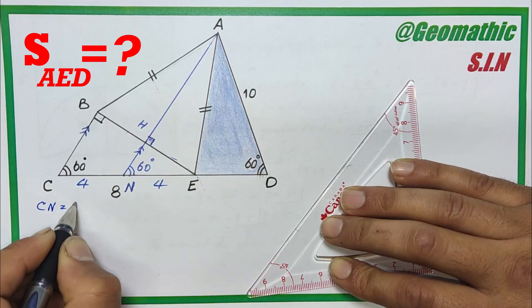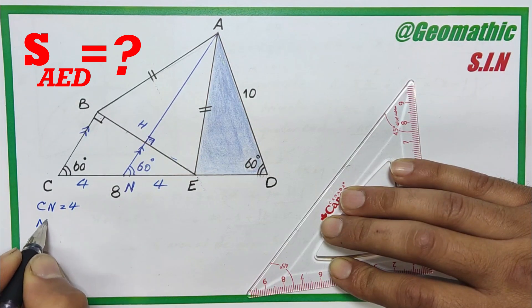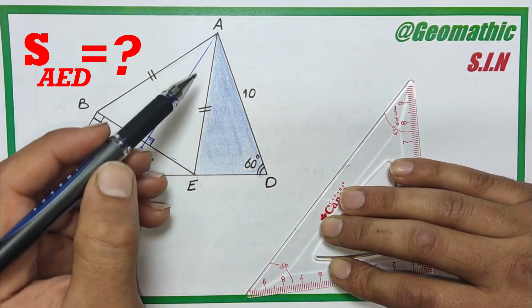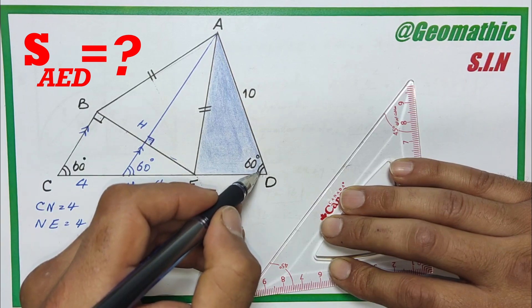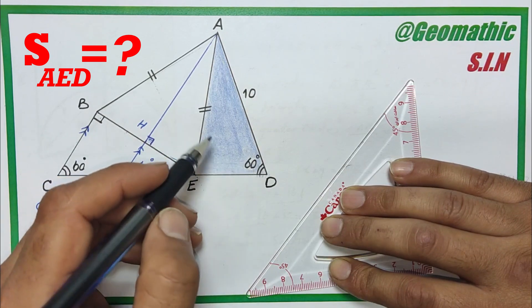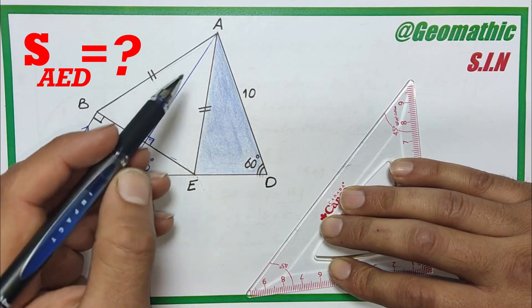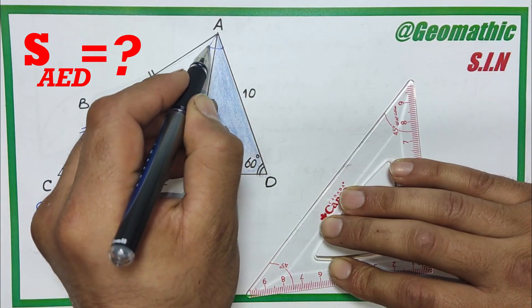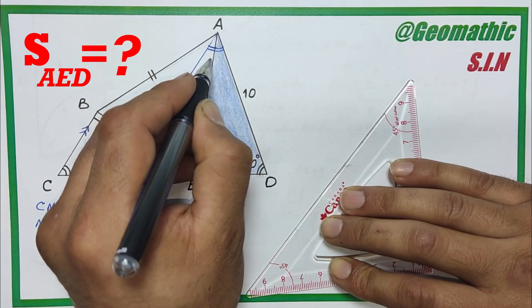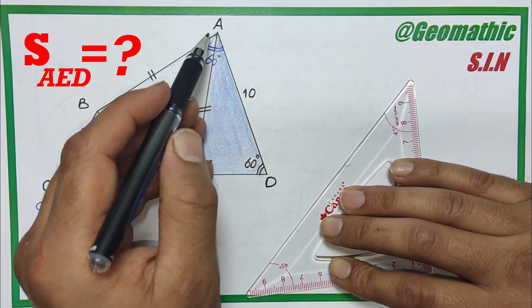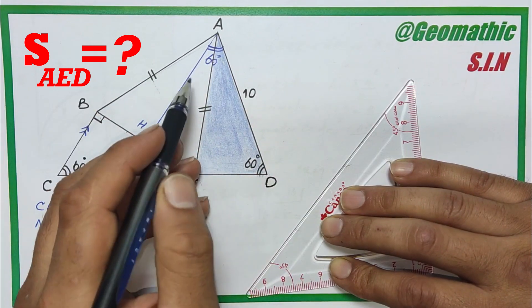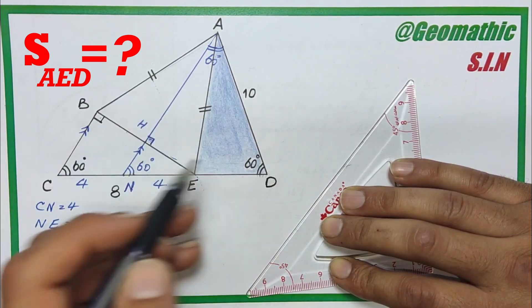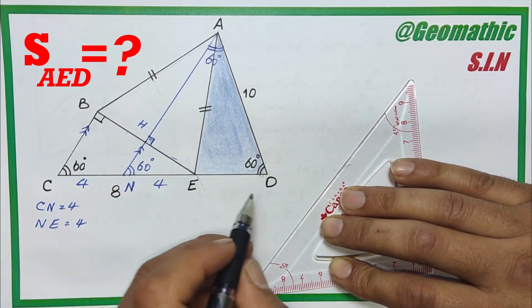Now we know CN equals 4 and NE equals 4. In triangle AND, you see angle N equals angle D, both are 60 degrees. So we know if in a triangle two angles are 60, the third one should be 60. So this angle is 60. Then we know this triangle AND is equilateral, and in an equilateral triangle all sides are equal. So if AD is 10, ND is 10 too.